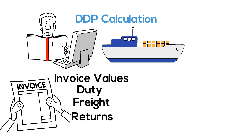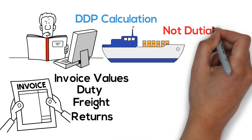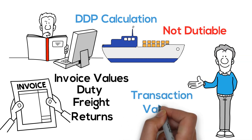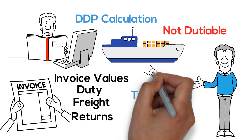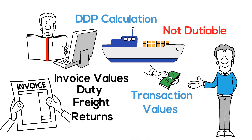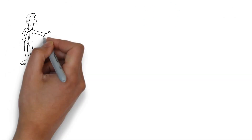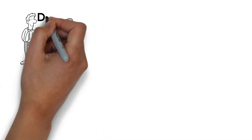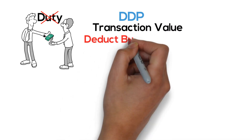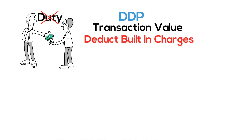But we know that international freight is not dutiable, insurance isn't dutiable, so when we're determining the transaction value we can deduct those so that the importer is paying less duty. They don't need to pay duty on freight and insurance, and they certainly don't need to pay duty on top of duty that was included in the invoice value. So with DDP, to get to the transaction value we need to deduct all of those charges that are built in.